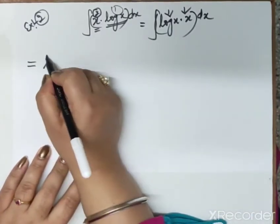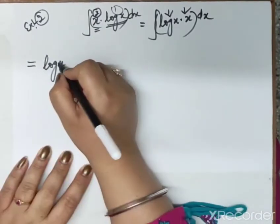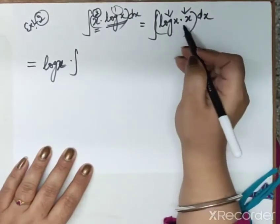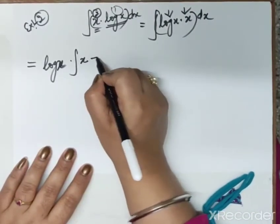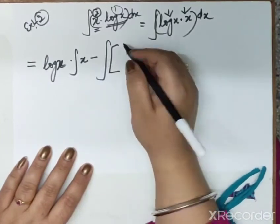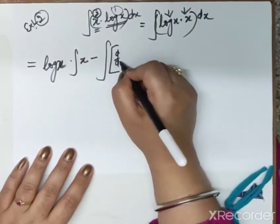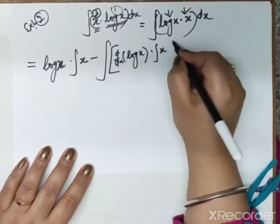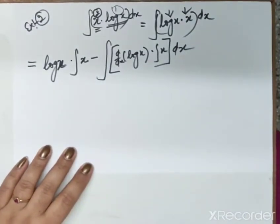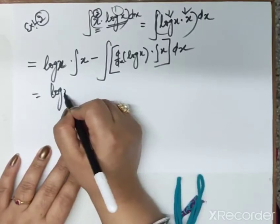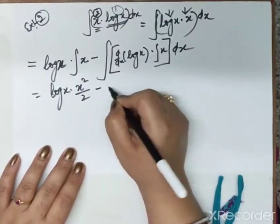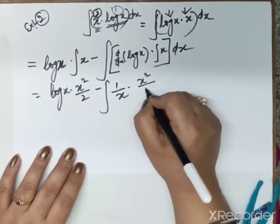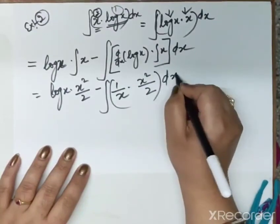Applying the formula: log(x) as it is, then × integration of x, minus big bracket — d/dx(log x) × integration of x — close bracket, all multiplied by dx. Integration of x is x²/2, and derivative of log(x) is 1/x. So we have log(x) · (x²/2) − ∫ (1/x) · (x²/2) dx.